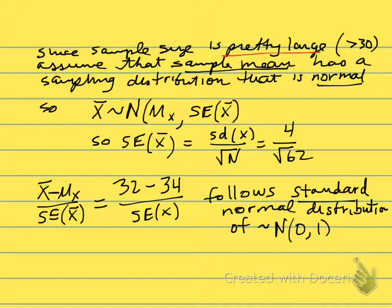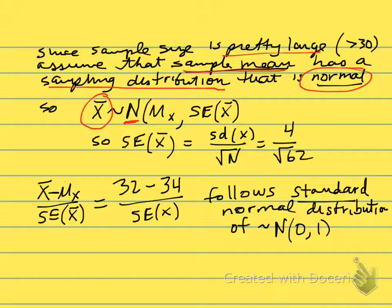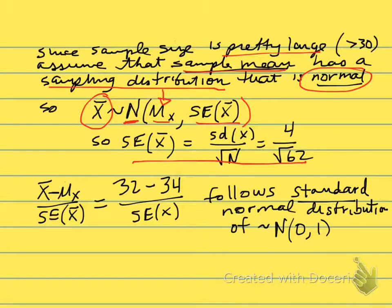The sample size is pretty large — greater than 30 — so we can assume that the sample mean has a sampling distribution that follows the normal distribution. We designate this with N. X-bar follows the normal distribution centered on our null hypothesis μ₀, because the sample mean is an unbiased estimate of the true population mean. The standard error of the sample mean is given by the standard deviation divided by the square root of N — that's all reviewed in chapters 2 and 3.